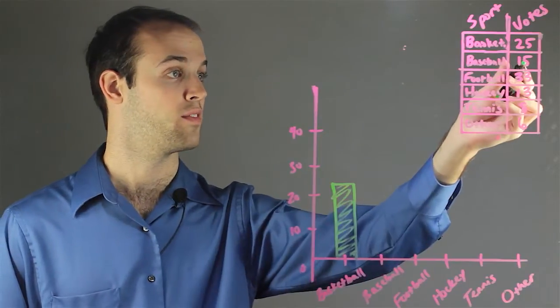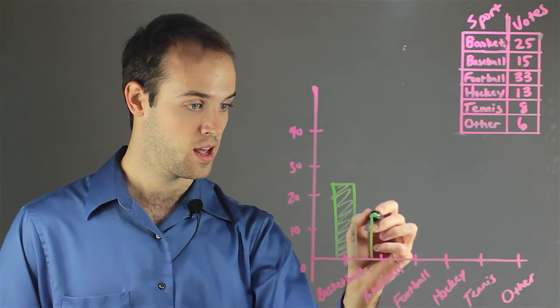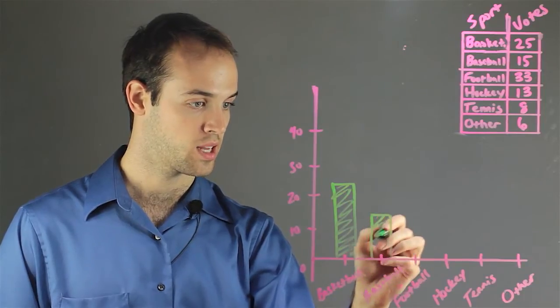Same thing for baseball. It got 15 votes, so I go over here to 15 and draw a bar up and down just like that.